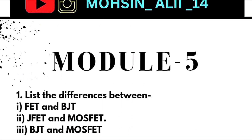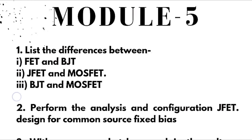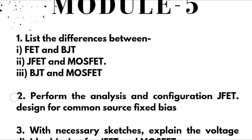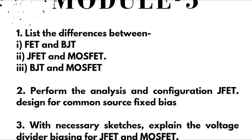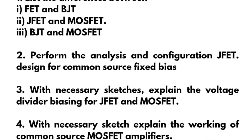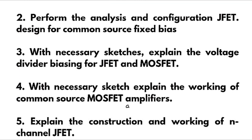Module 5 is the passing module where you can easily grab 20 marks by covering this portion. First, we have listed the differences between FET and BJT. They may also ask you JFET and MOSFET, or differences between BJT and MOSFET. Next, we have the analysis and configuration of JFET designed for common source fixed bias. With necessary sketches, explain the voltage divider biasing for JFET and MOSFET.